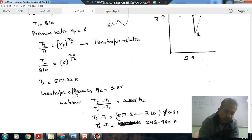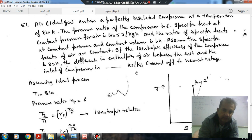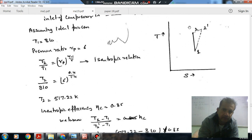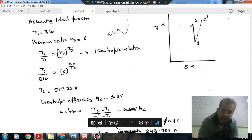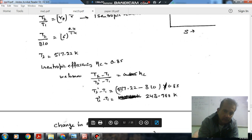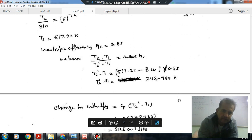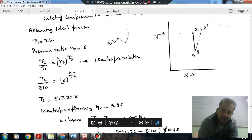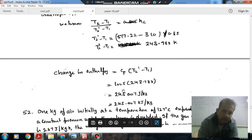Now the isentropic efficiency is 0.85. So we have T1 and we have T2. Isentropic efficiency of the compressor is T2 minus T1 divided by T2 dash minus T1. From this we can get T2 dash minus T1, that is 517.22 minus 300 divided by 0.85. So T2 dash minus T1 equals 243.7. Now the change in enthalpy is Cp into this, so that is 1005 × 243.7, which is 245,007 joules per kilogram.